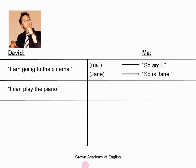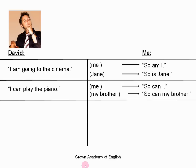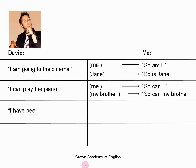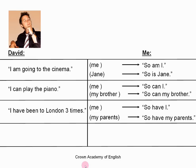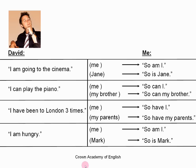More examples: 'I can play the piano.' - 'So can I.' - 'So can my brother.' 'I have been to London three times.' - 'So have I.' - 'So have my parents.' 'I am hungry.' - 'So am I.' And 'So is Mark.'